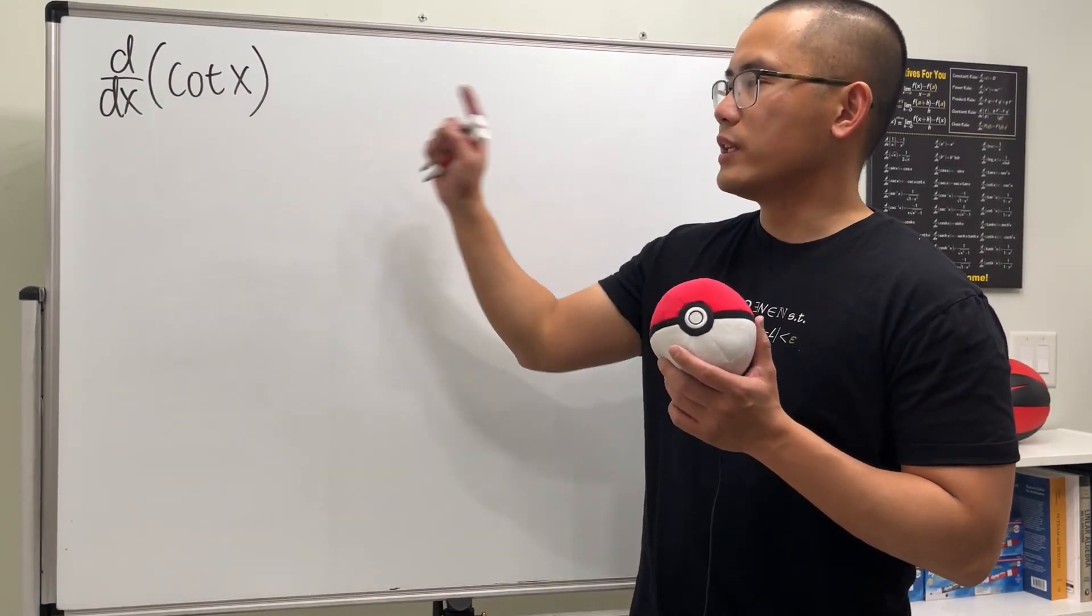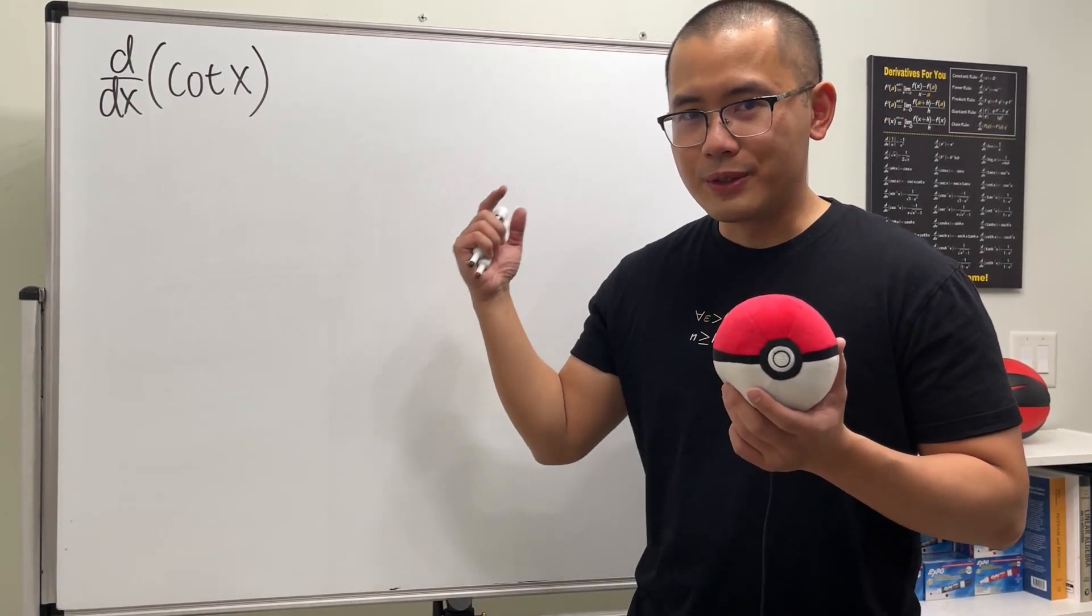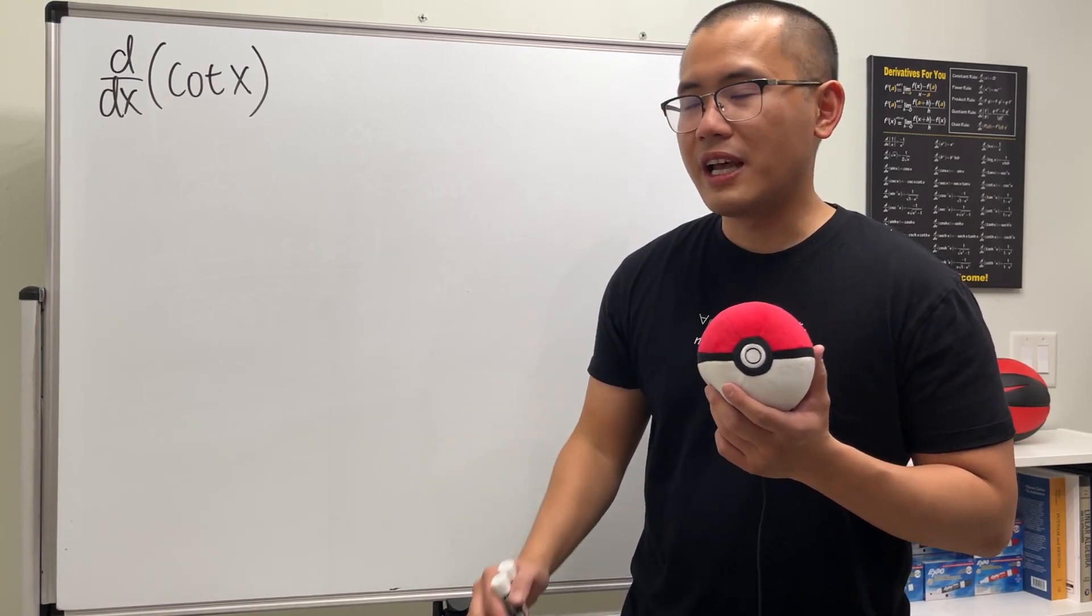All right, let's do the derivative for cotangent x. Well, cotangent x is the same as cosx over sinx.